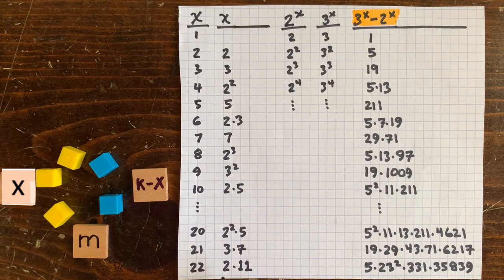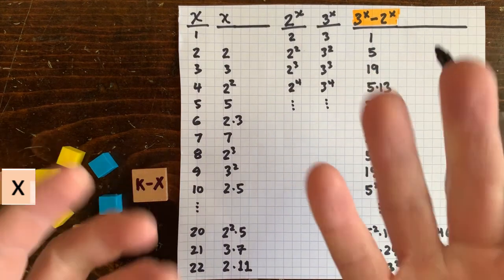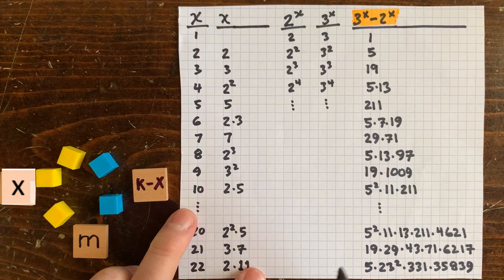20 is 2 times 2 times 5. 21 is 3 times 7. 22 is 2 times 11. But there's some method to this madness.